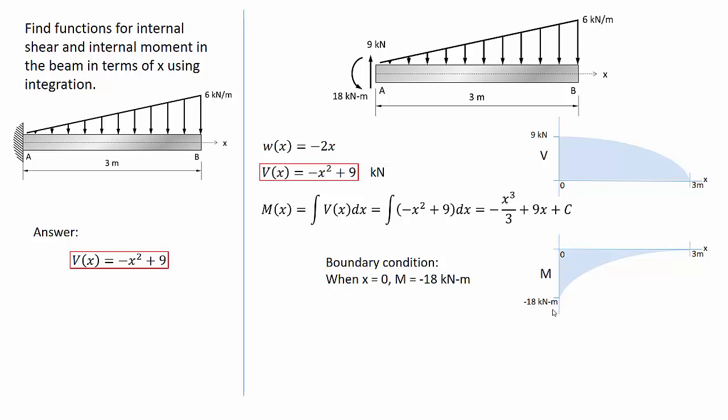So I will use this boundary condition. When x is equal to 0, the internal moment is negative 18 kN meters. I will plug in values for x of 0 into my moment equation and set it equal to negative 18. And now the only unknown is my constant of integration, which I can solve for, and it is negative 18.